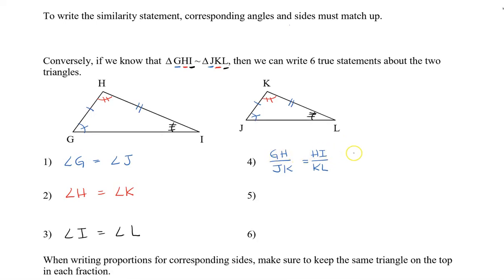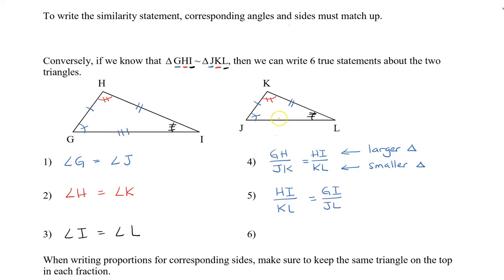Notice that in the numerator, or the top of my fraction, this represents the larger triangle, and the bottom represents the smaller triangle. It doesn't matter which triangle's side lengths you put on the top or the bottom, as long as both of the two from the same triangle are consistently on top or on the bottom. We also know that HI divided by KL equals GI over JL, which is the third side length. And finally, GH divided by JK equals GI divided by JL. So it's very important, when writing the proportions for the corresponding sides, to make sure that you keep the same triangle on the top of each fraction. So let's take a look at some examples.